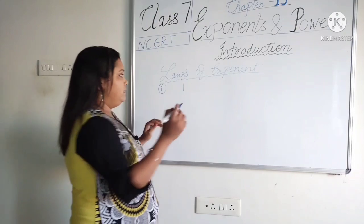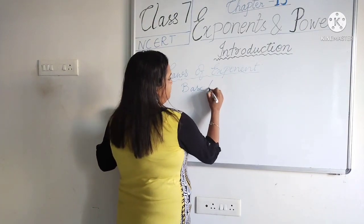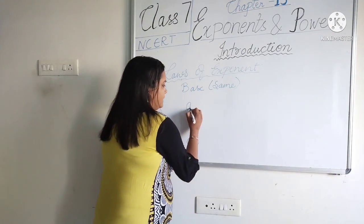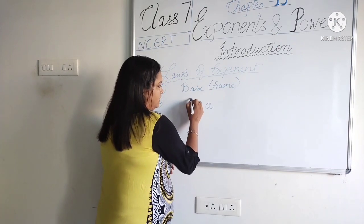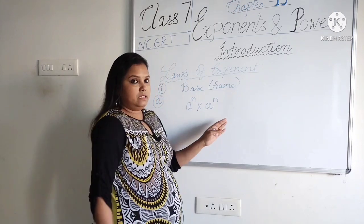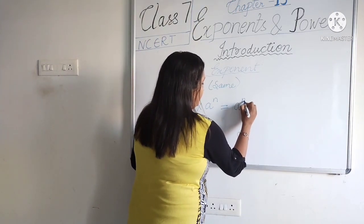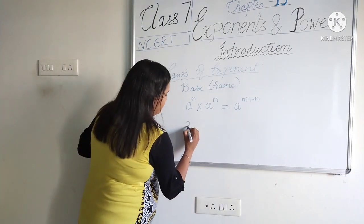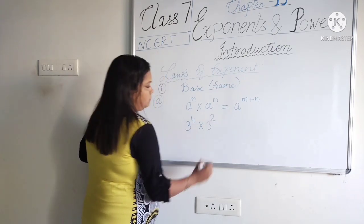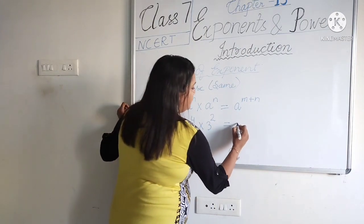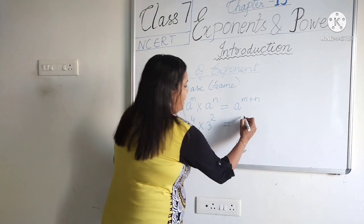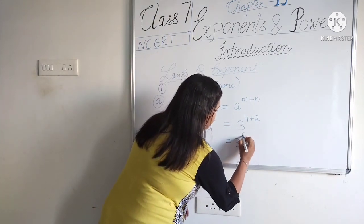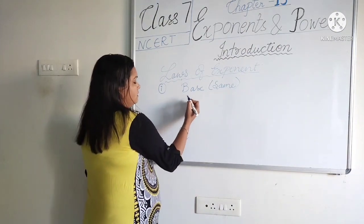Now we will discuss the laws of exponents. The first law: when the base is the same, if you multiply, you add the exponents. That is, a^m × a^n = a^(m+n). For example, 3 to the power 4 multiplied by 3 to the power 2: keep the same base 3 and add the exponents 4 + 2, giving 3 raised to the power 6.